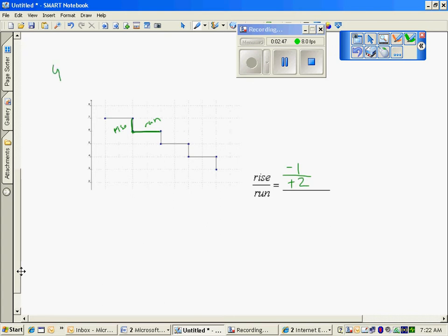Over to the right is a positive direction. So if you are going up, it's positive. Down is negative. If you are moving to the right, that's positive. If you are moving to the left, that would be negative. So I'm moving down one and over two.